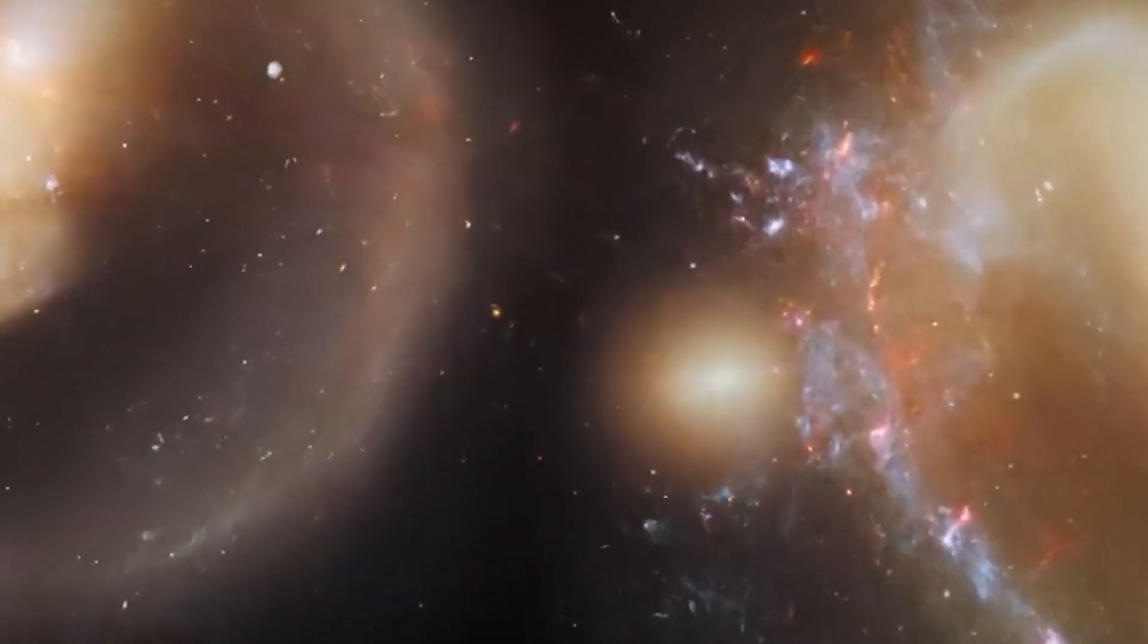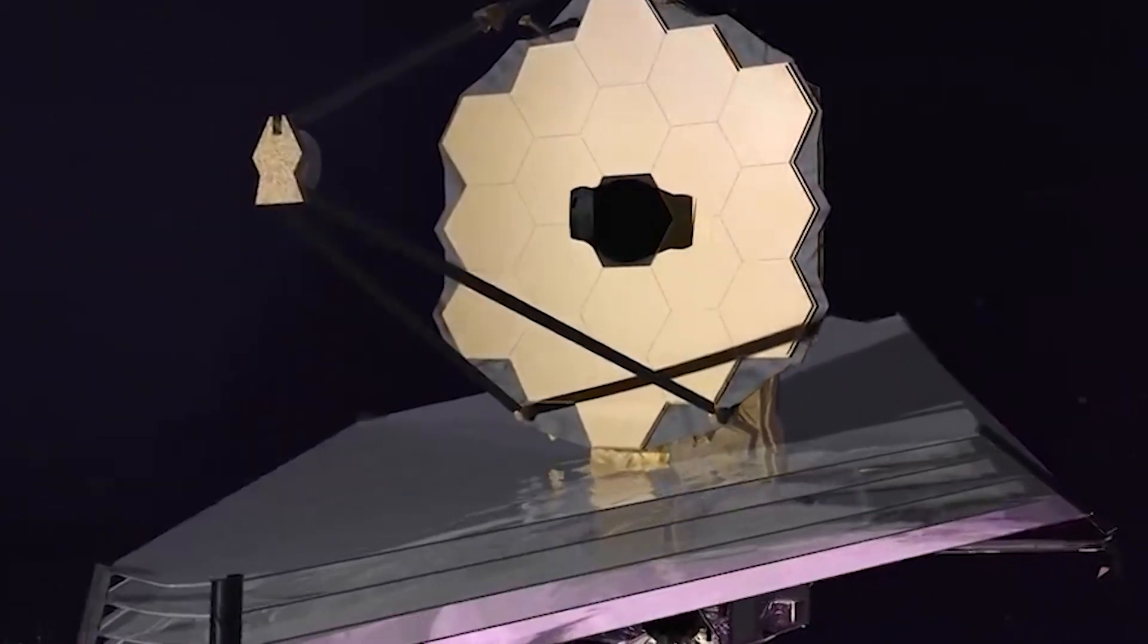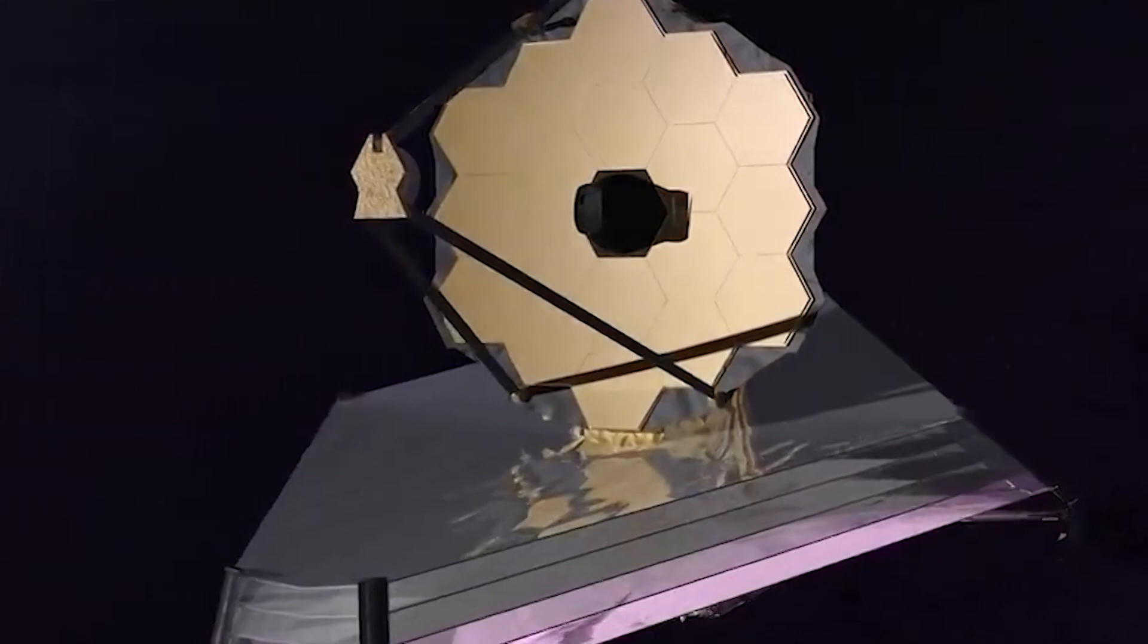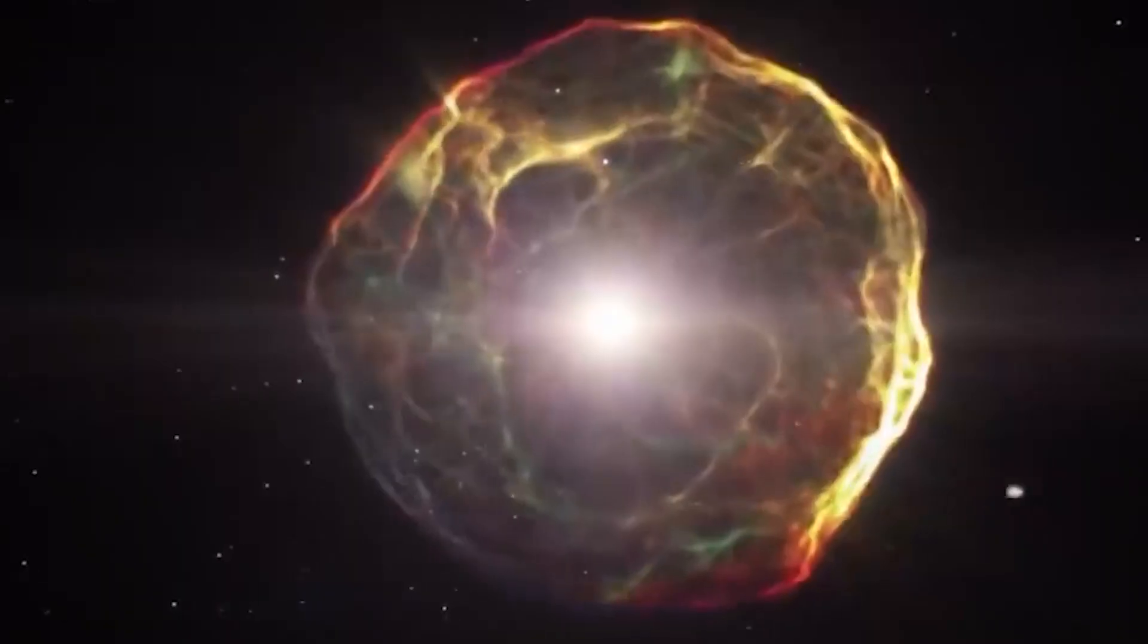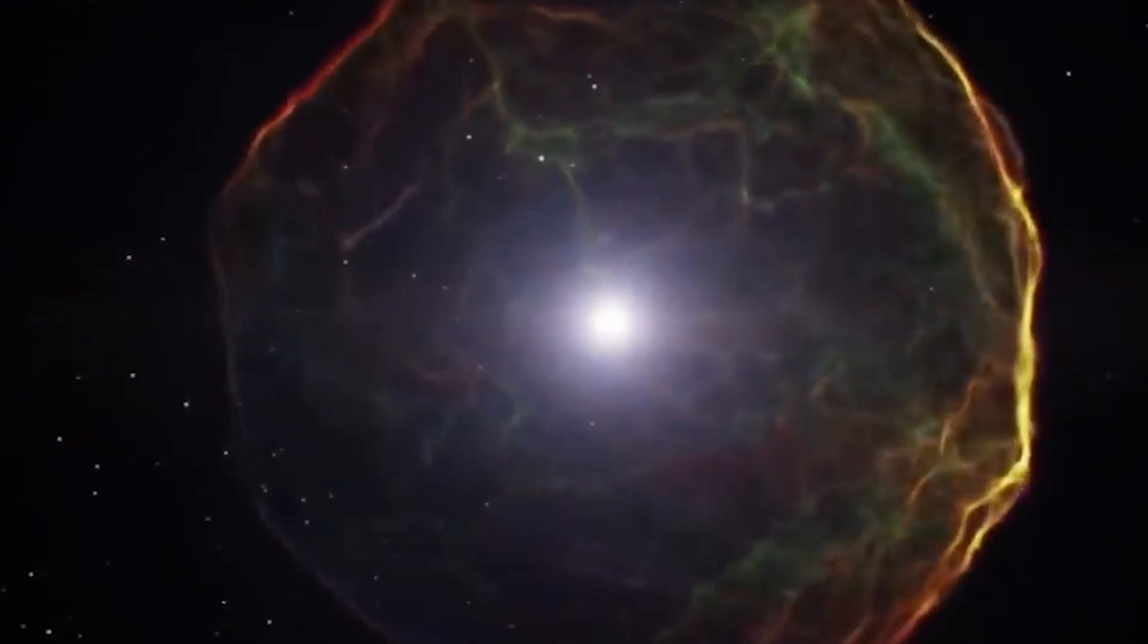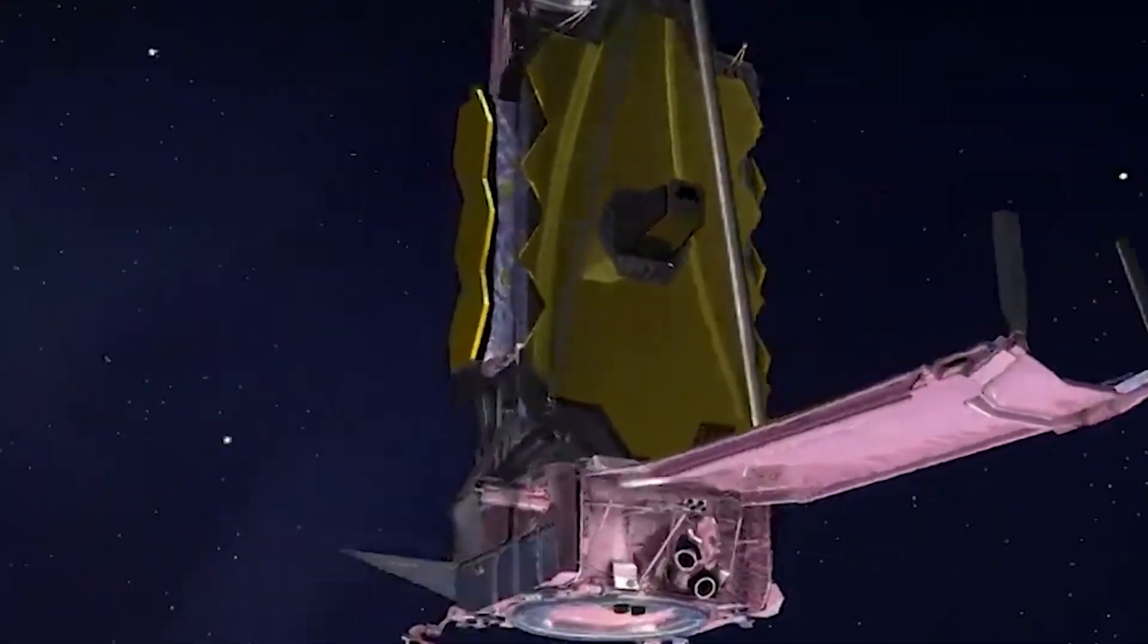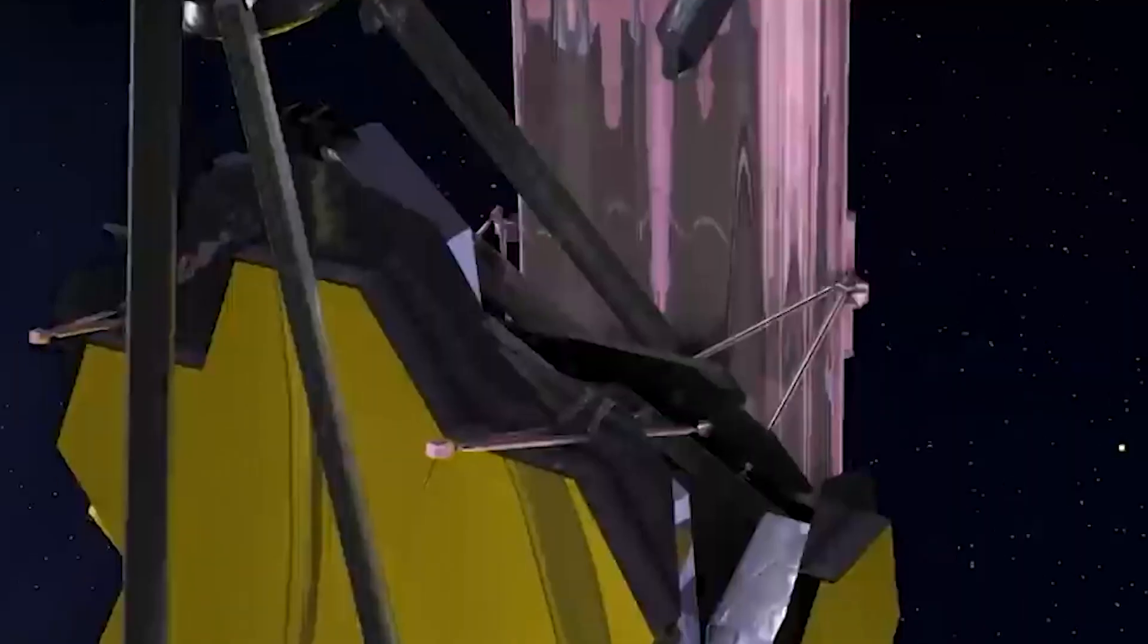NASA's Viking 1 mission, which landed on Mars in 1976, was the first probe that Mars' environment was once conducive to life. Now, 46 years later, the long-awaited Webb Telescope will assist researchers in the quest to find life by peering into far-off exoplanets' atmospheres.